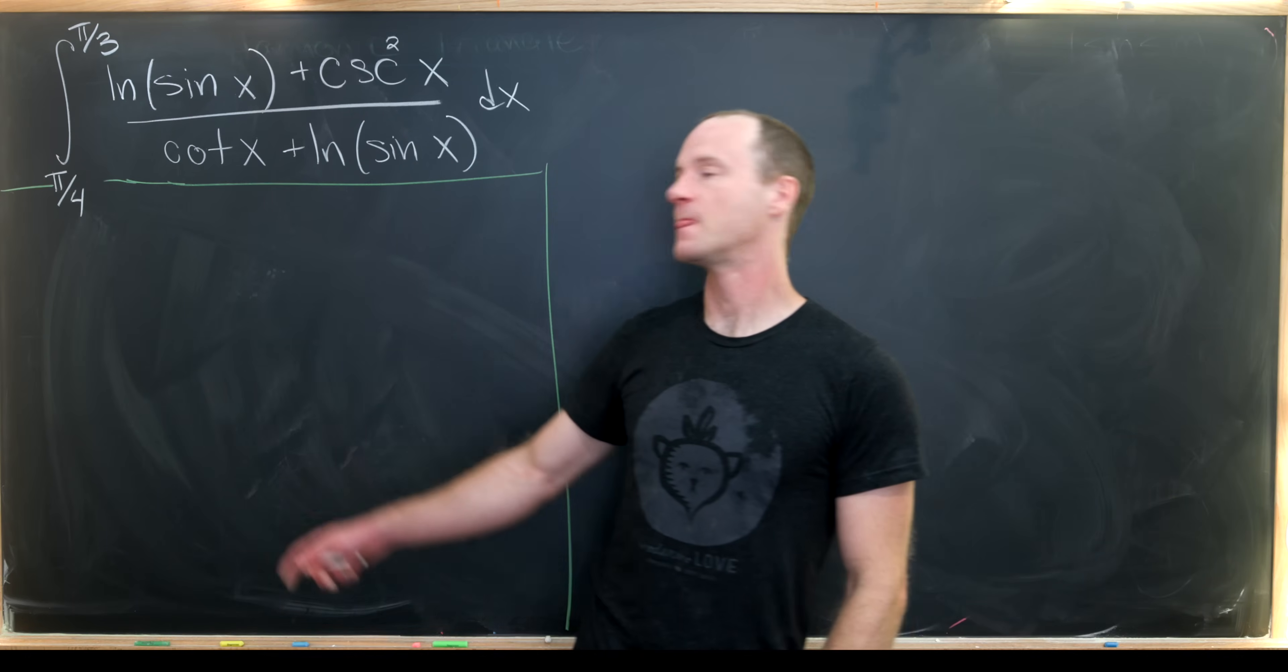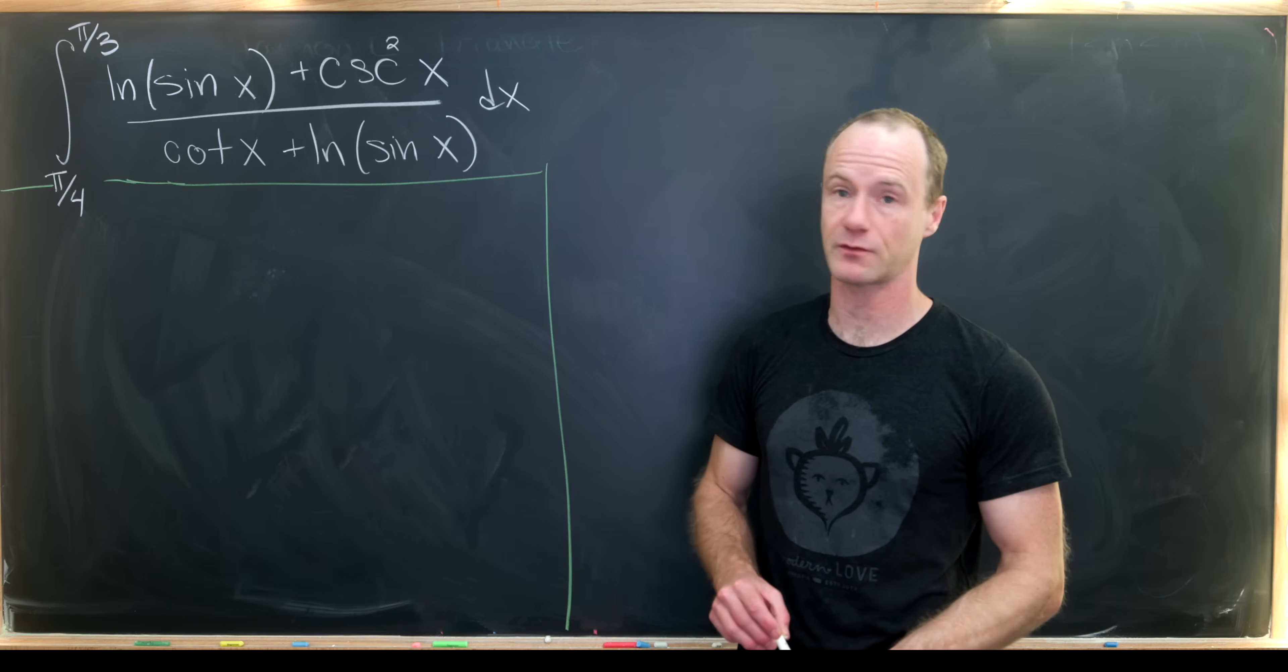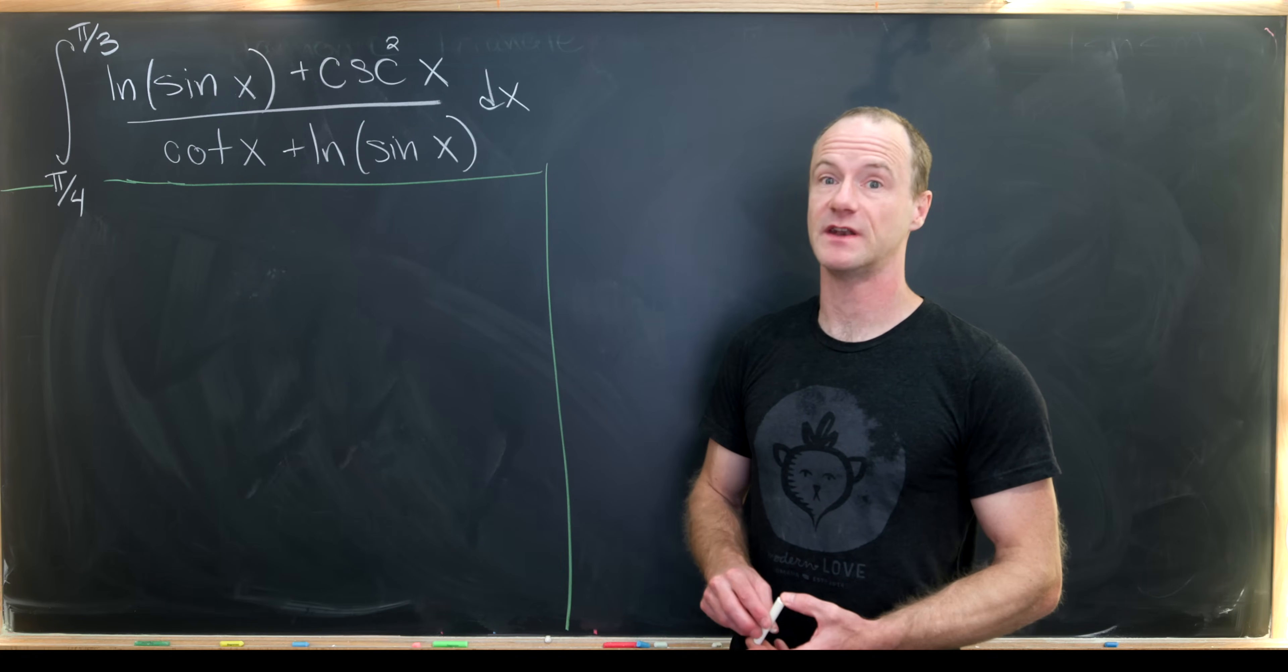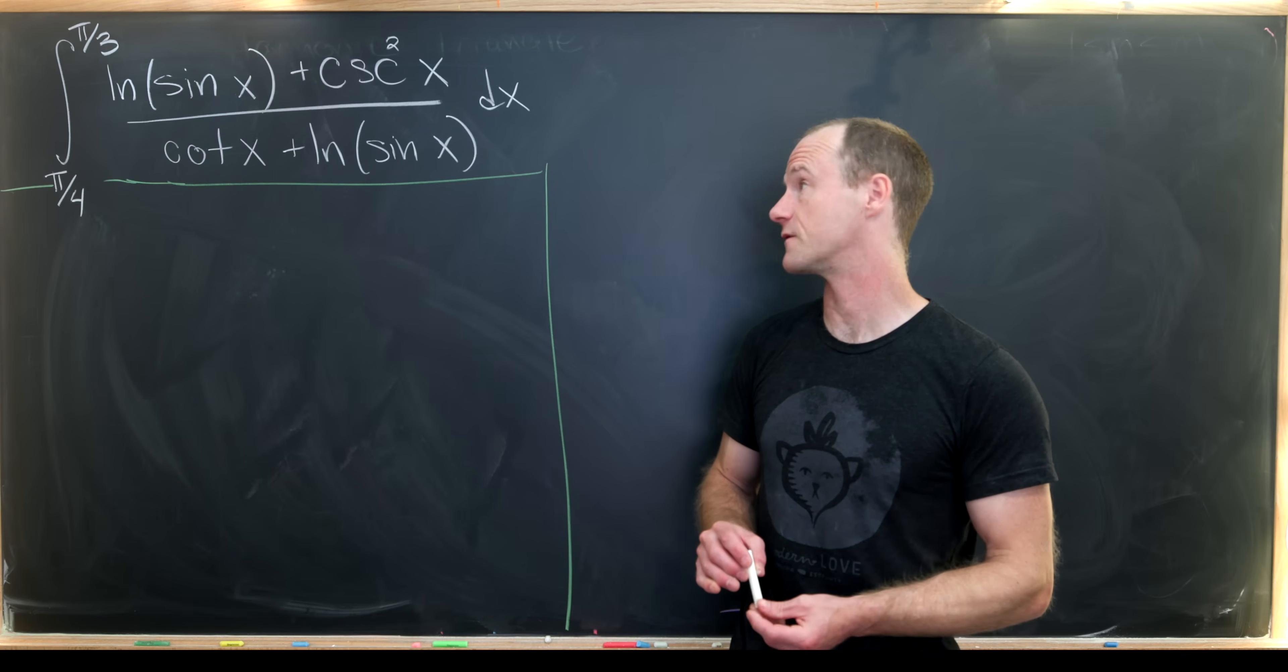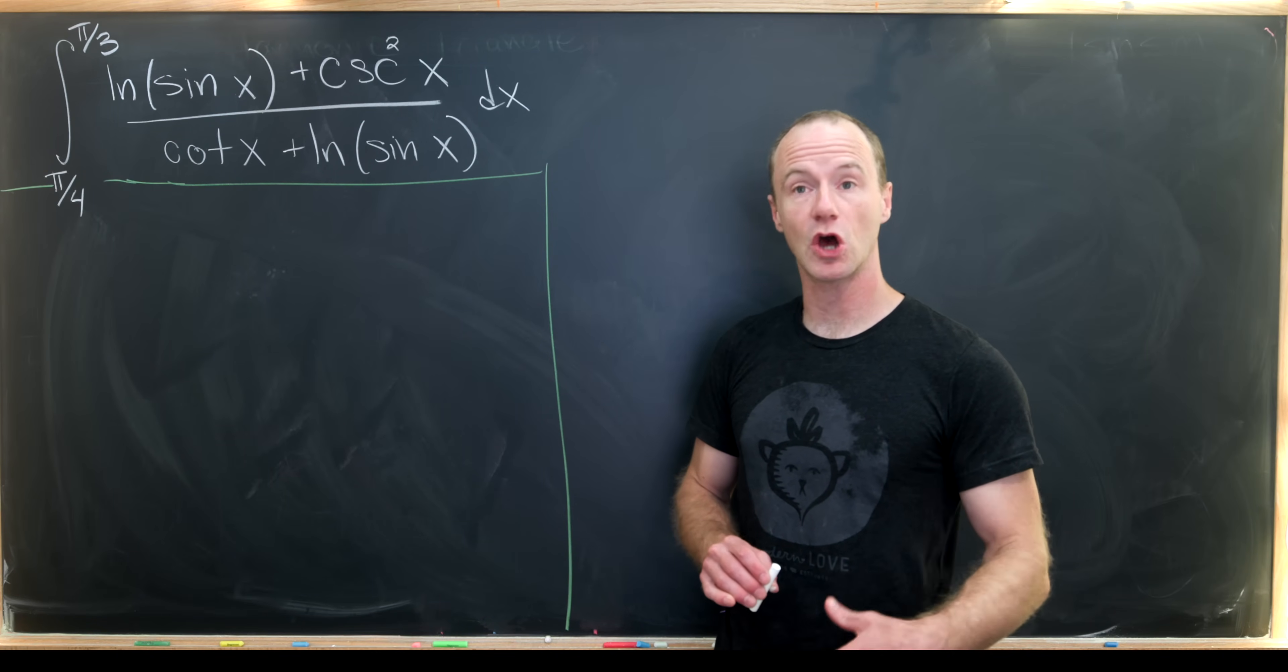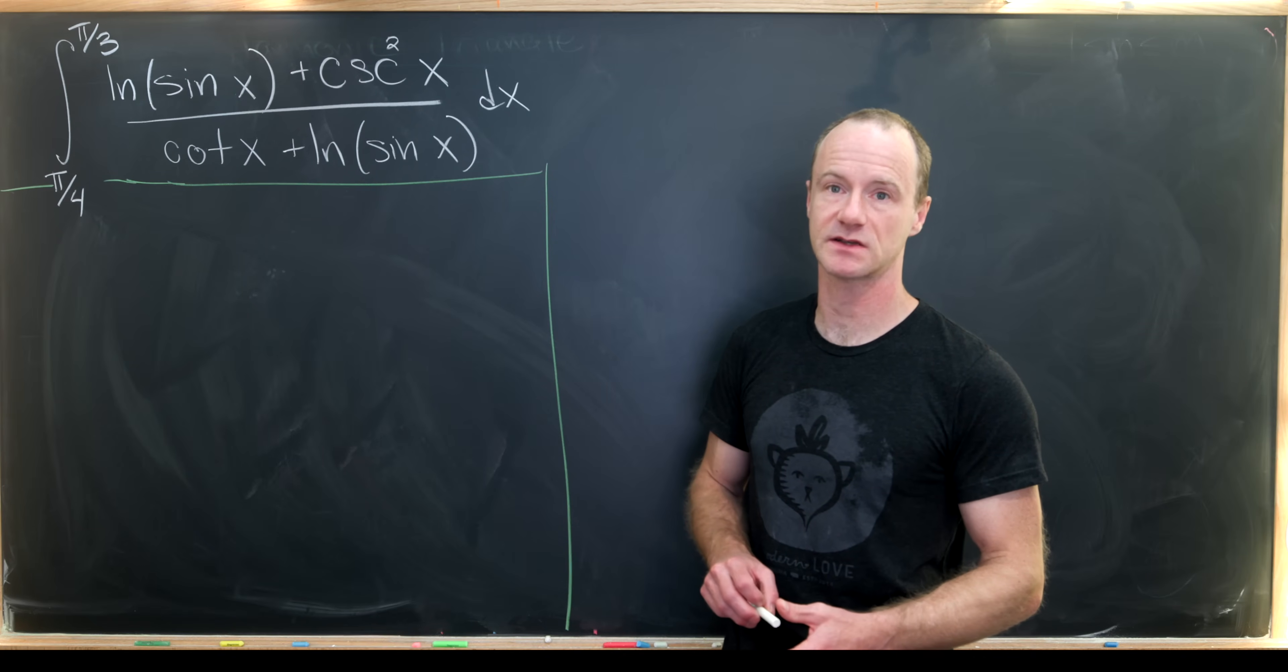So let's see what we have. We want to find the integral from π/4 to π/3 of the natural log of sine of x plus cosecant squared of x over cotangent of x plus natural log of sine of x.